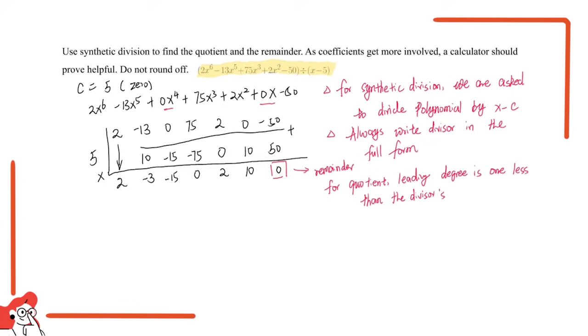By which I mean, the divisor's leading degree is the sixth. And for our leading degree for the quotient, it's supposed to be the fifth. And for these numbers we get from here, these are coefficients of quotient.